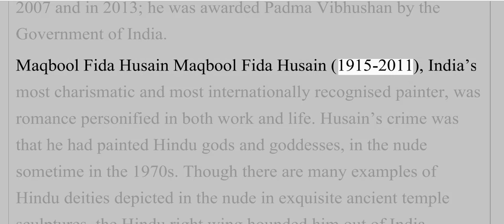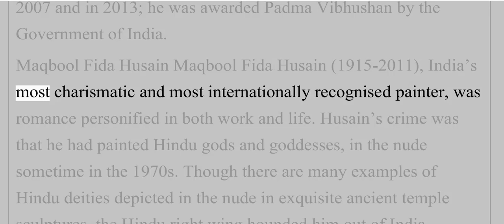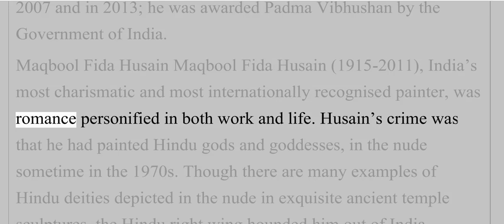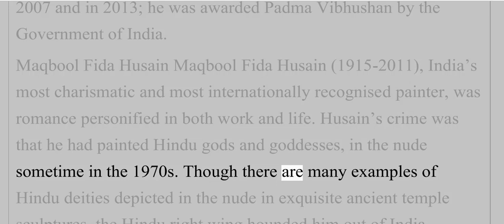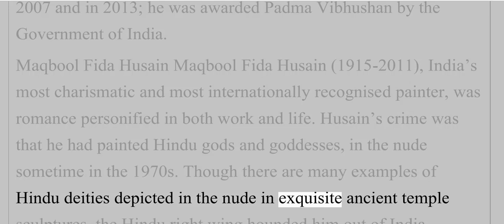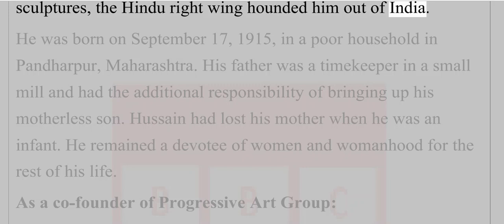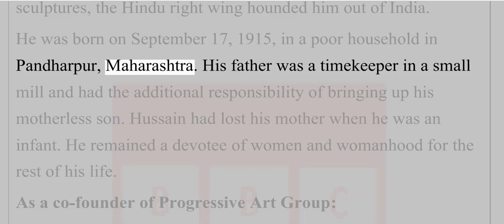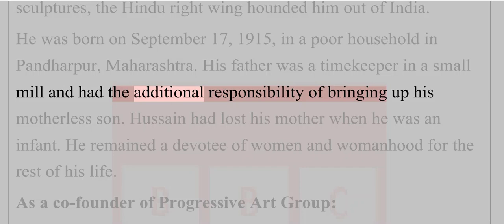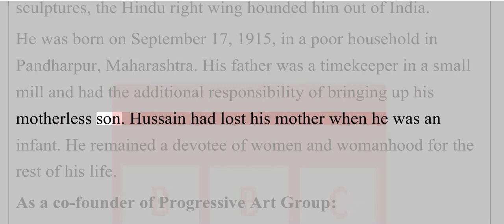Maqbool Fida Hussain (1915–2011), India's most charismatic and most internationally recognized painter, was romance personified in both work and life. Hussain's crime was that he had painted Hindu gods and goddesses in the nude sometime in the 1970s. Though there are many examples of Hindu deities depicted in the nude in exquisite ancient temple sculptures, the Hindu right wing hounded him out of India. He was born on 17 September 1915, in a poor household in Pandharpur, Maharashtra. Hussain had lost his mother when he was an infant.